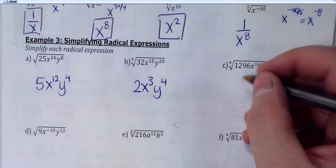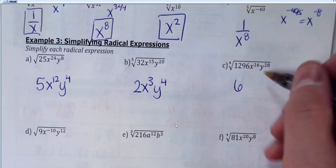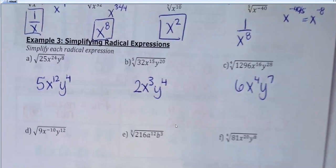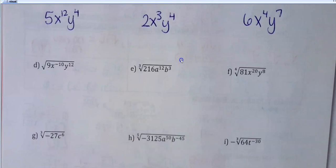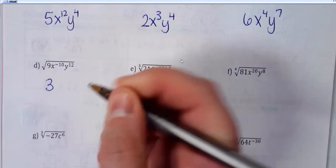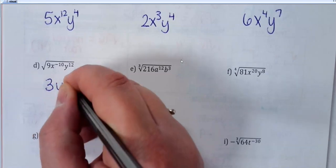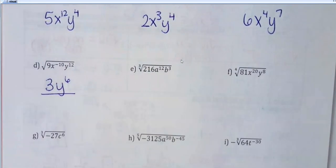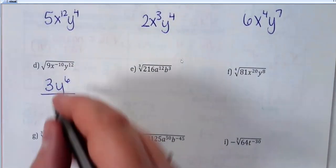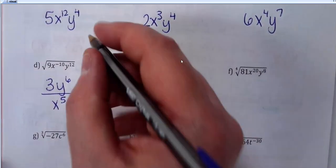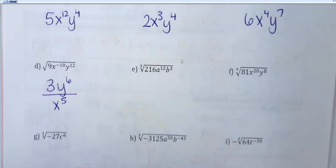This next one is a fourth root of 1296 — that's 6. 16 divided by 4 is x to the 4th, and 28 divided by 4 is y to the 7th. Now if you've got some negatives mixed in: square root of 9 is 3, and y to the 12th would become y to the 6th. And I'm just going to automatically put that negative exponent in the bottom, make it positive when I move it — so this should just be 3 times y to the 6th over x to the 5th. That's all you have to do.